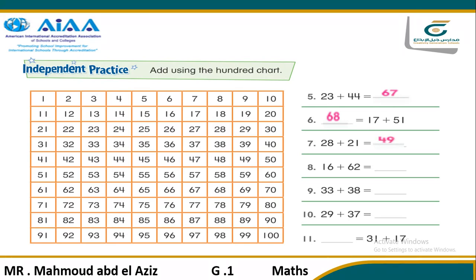Another question: 16 plus 62. Where is 16? That's 16. Plus 62. So we will go down 6 steps: 1, 2, 3, 4, 5, and 6. So we are now at 76. The ones digit is 2, so we will go ahead 2 steps: 1 and 2. So our sum is 78.